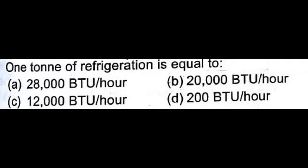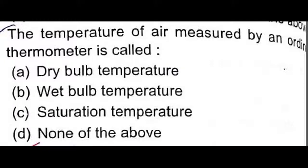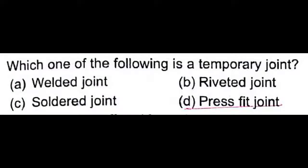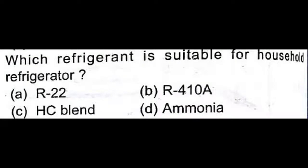One ton of refrigeration is equal to 12,000 BTU per hour and 200 BTU per minute — option C is correct. HFC refrigerants have a low ozone depletion potential value — option A is correct. The temperature of air measured by an ordinary thermometer is called dry bulb temperature. A press fit joint is a temporary joint, whereas welding, soldering, and riveted joints are permanent.